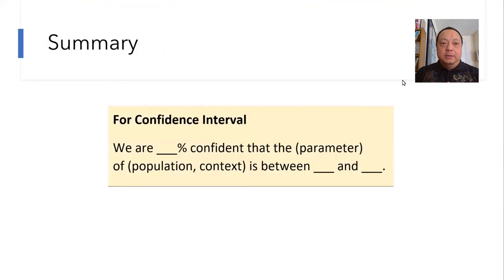In summary, for a confidence interval, write your conclusion like this. We are blank percent confident that the blank parameter of blank, and here insert the population and context from the question, maybe just copy verbatim from the prompt, and then followed by the numbers, is between blank and blank.